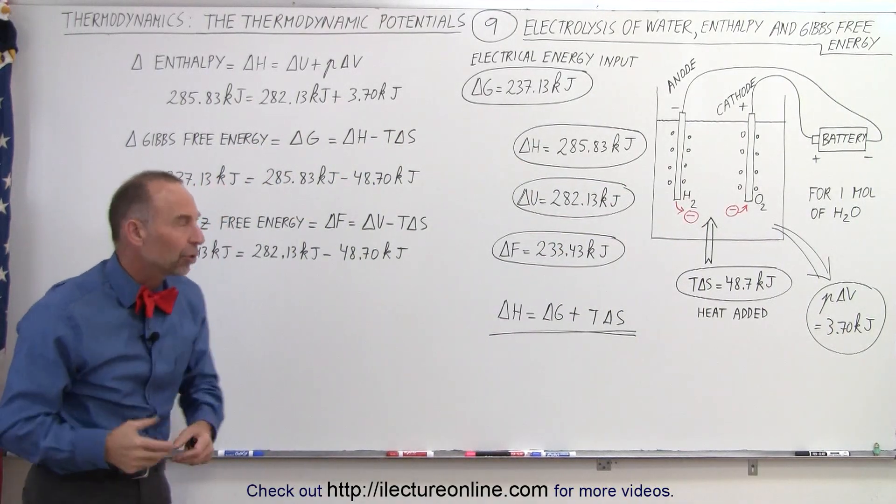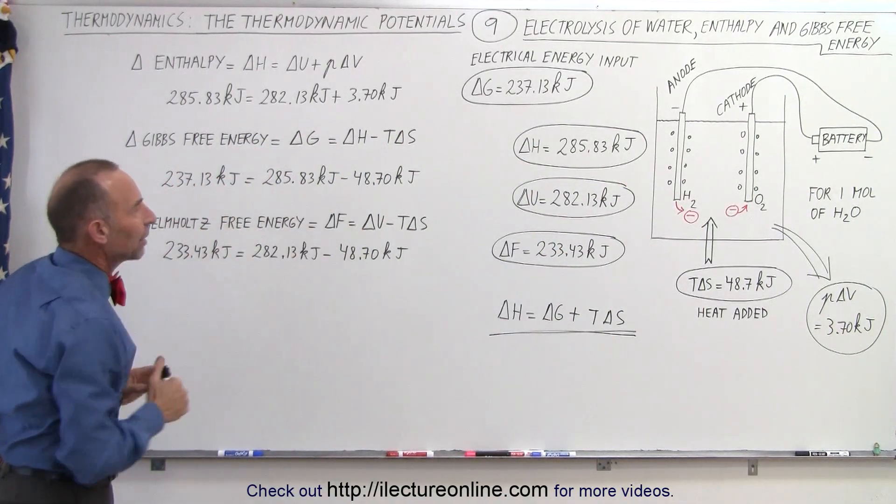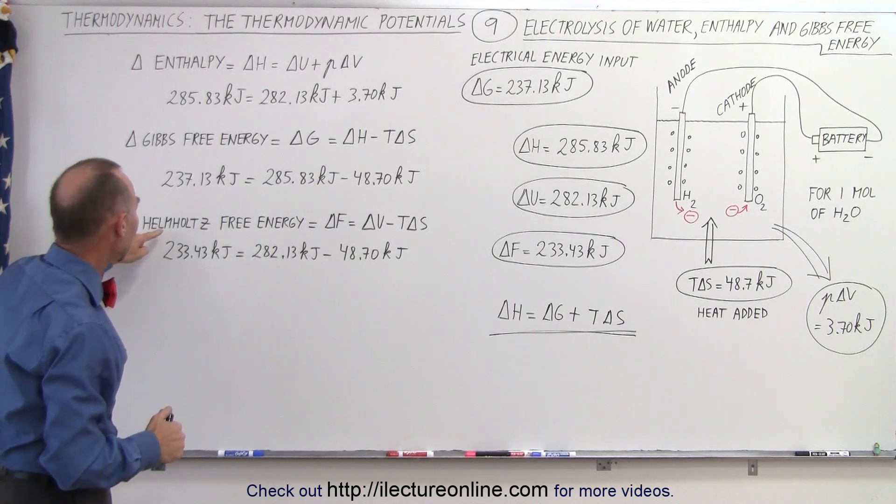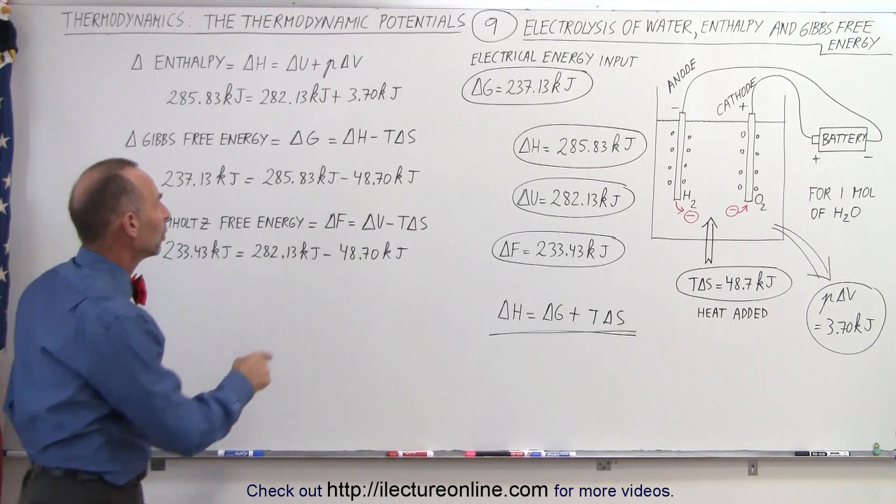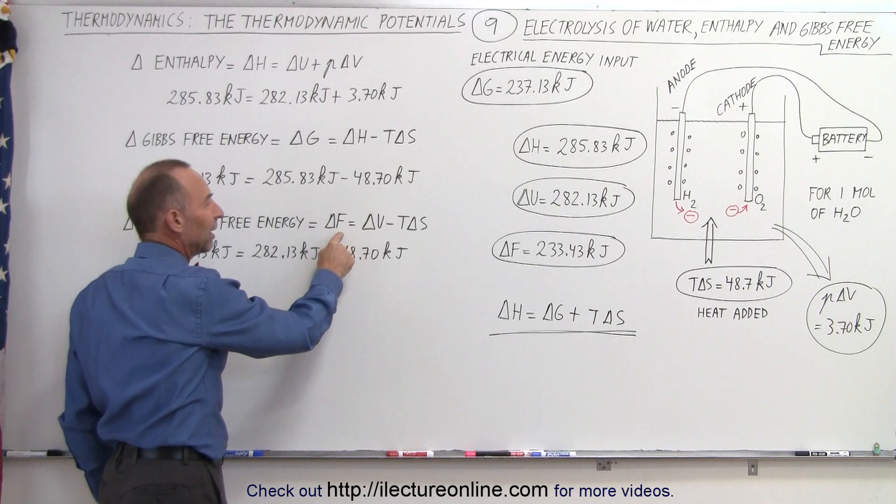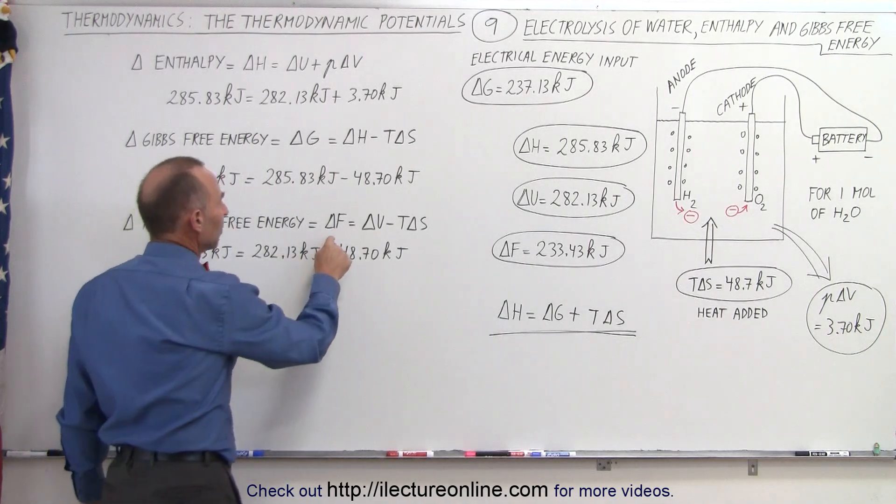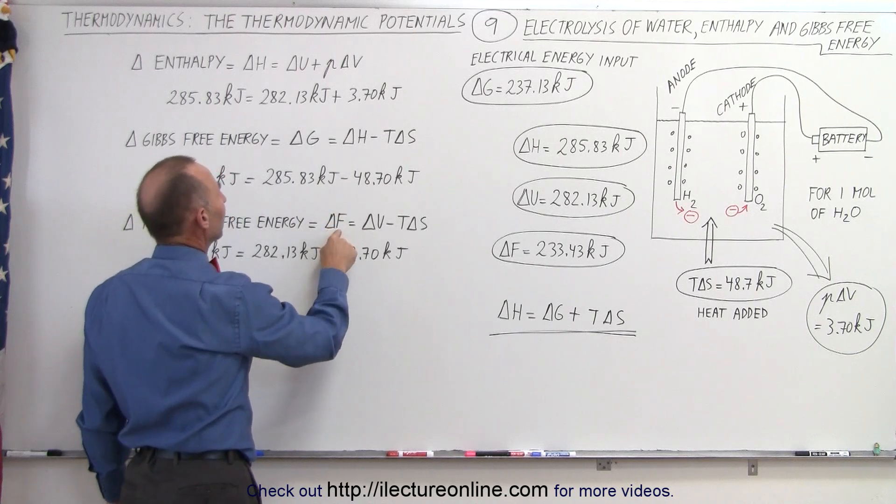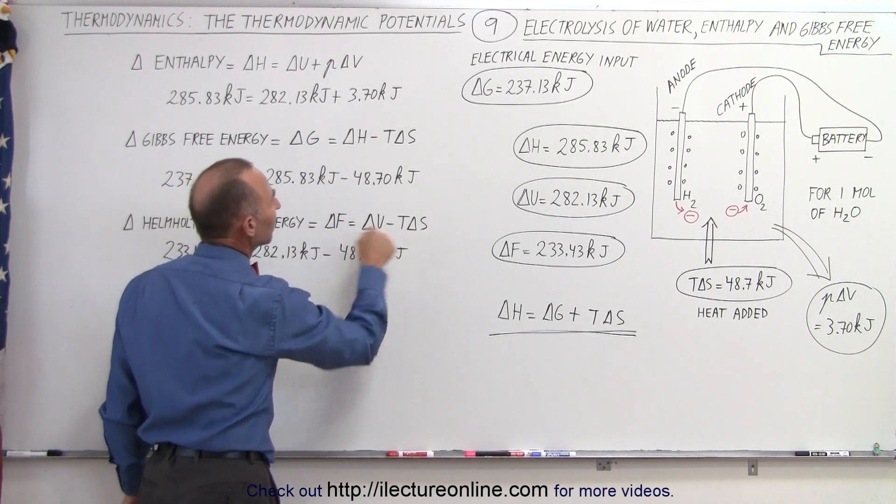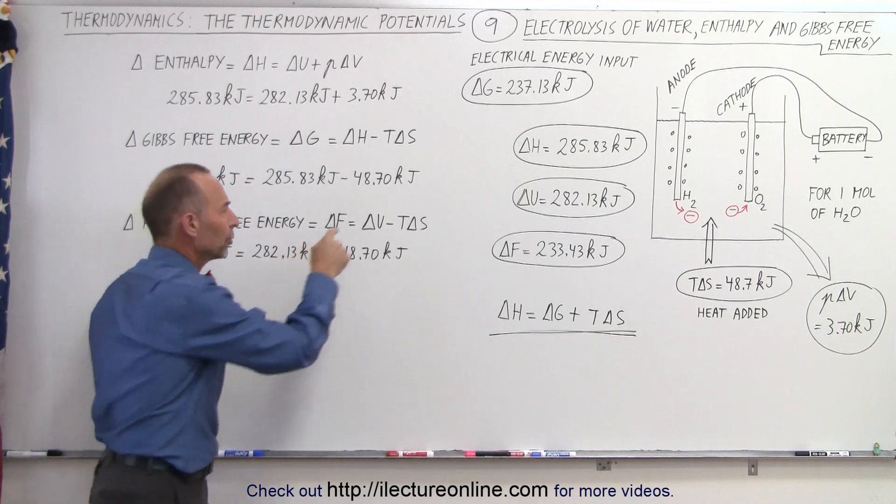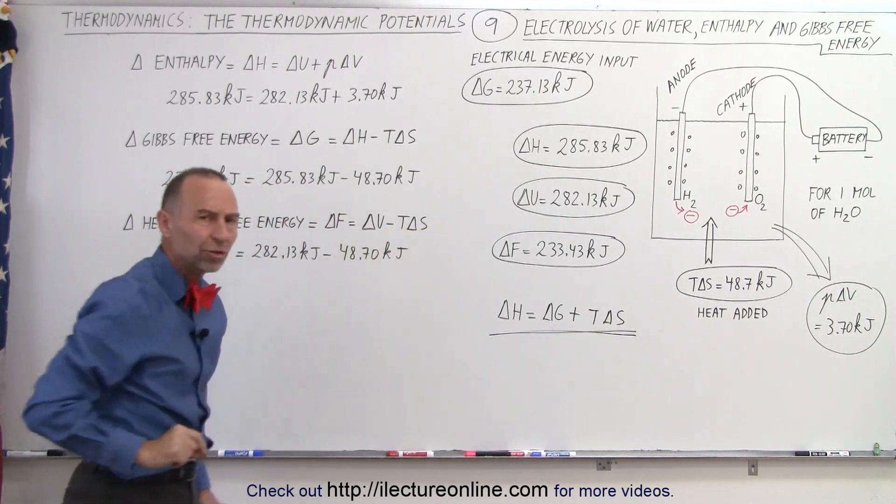And finally, we have what we call the Helmholtz free energy, which we use the letter F for that. I've also seen the letter A, so it depends where you look. But my textbook, my old textbook uses F. So delta F is equal to delta U minus T delta S.